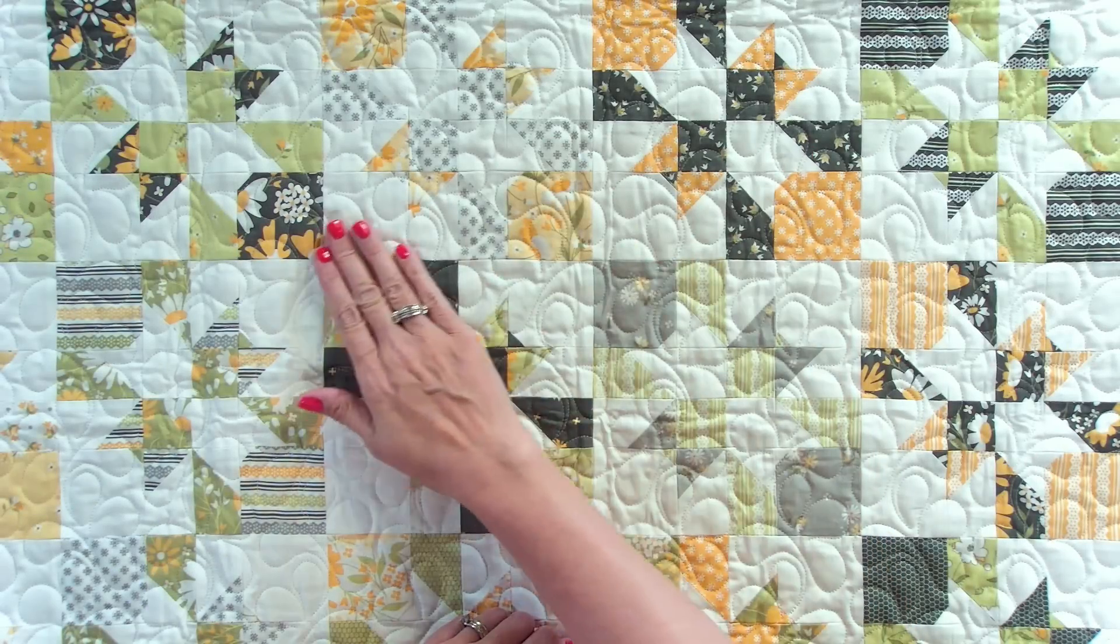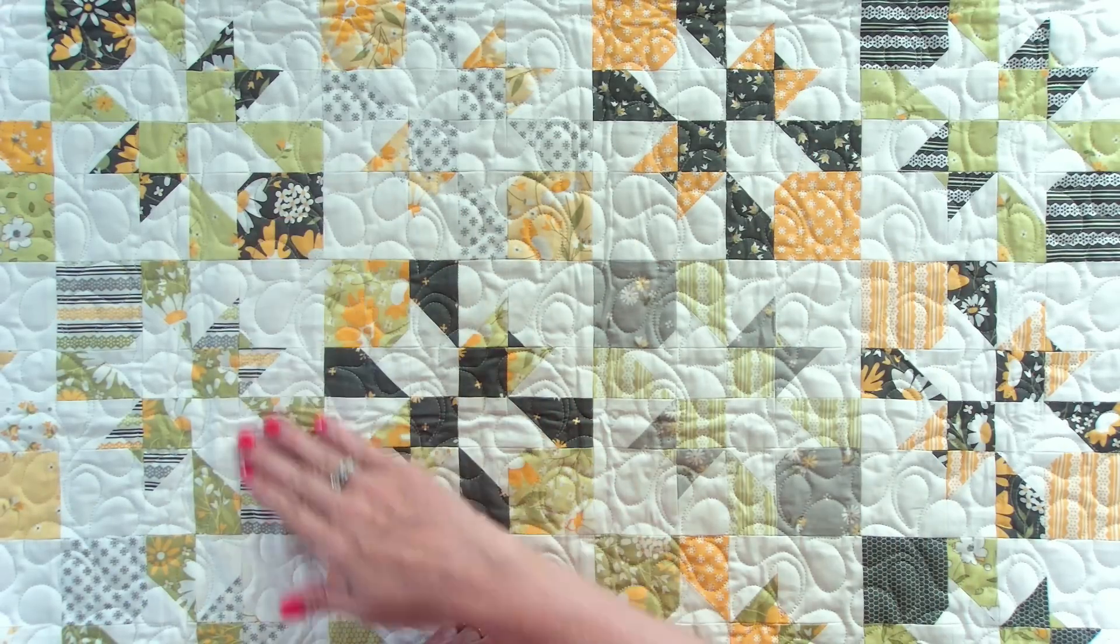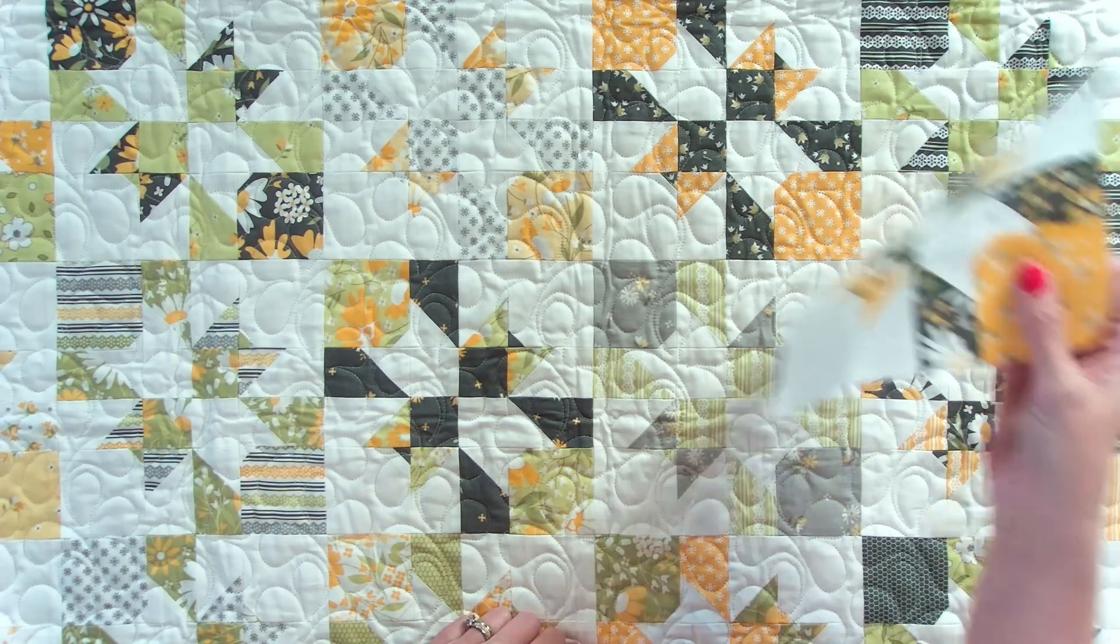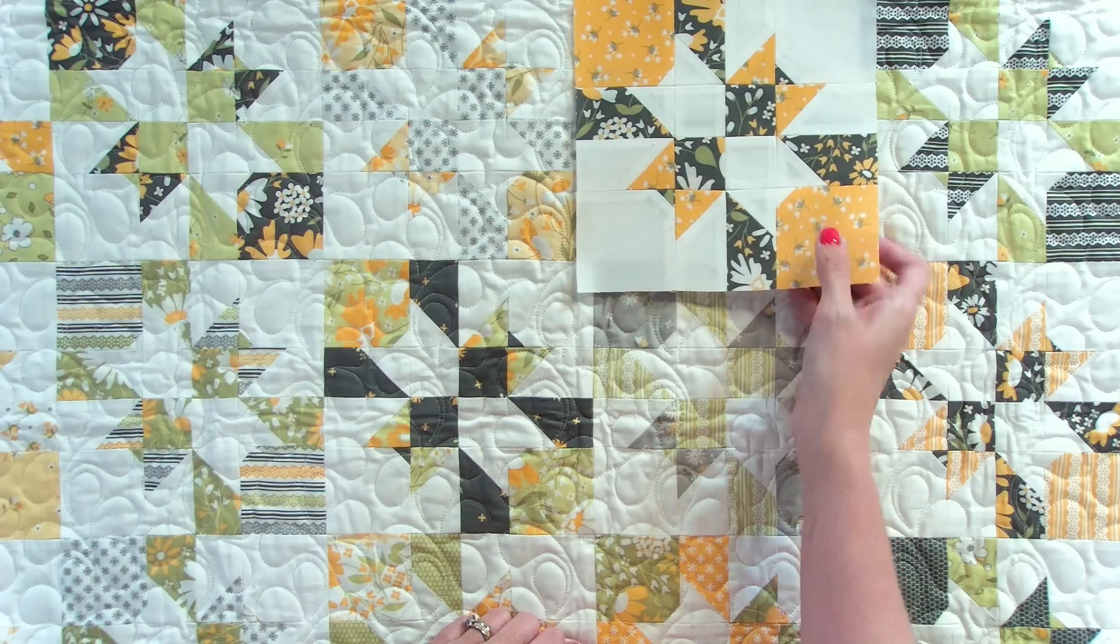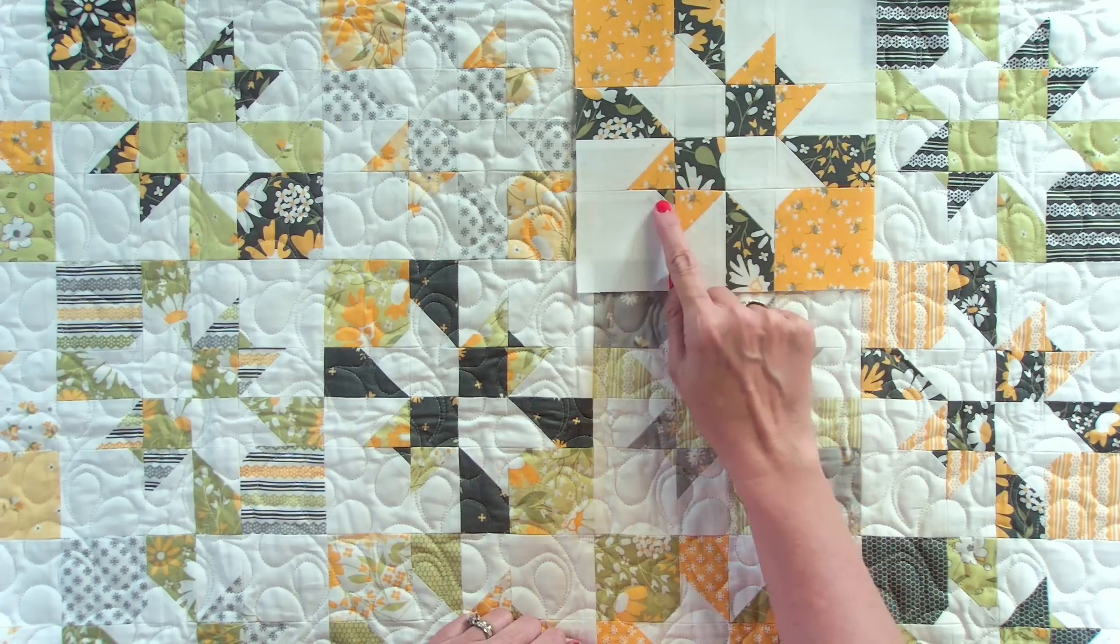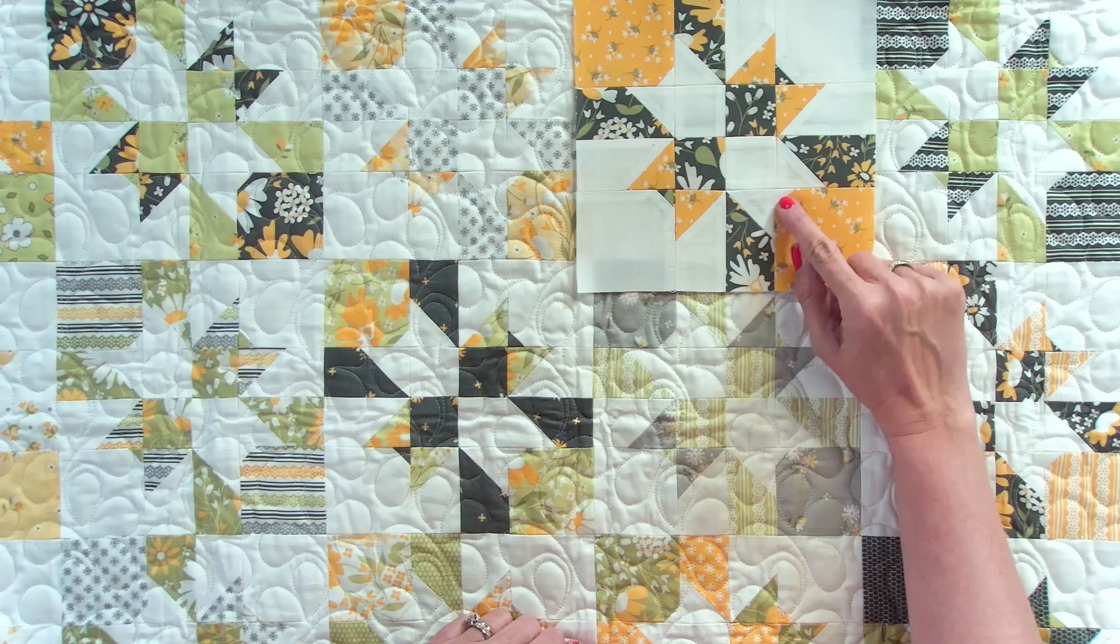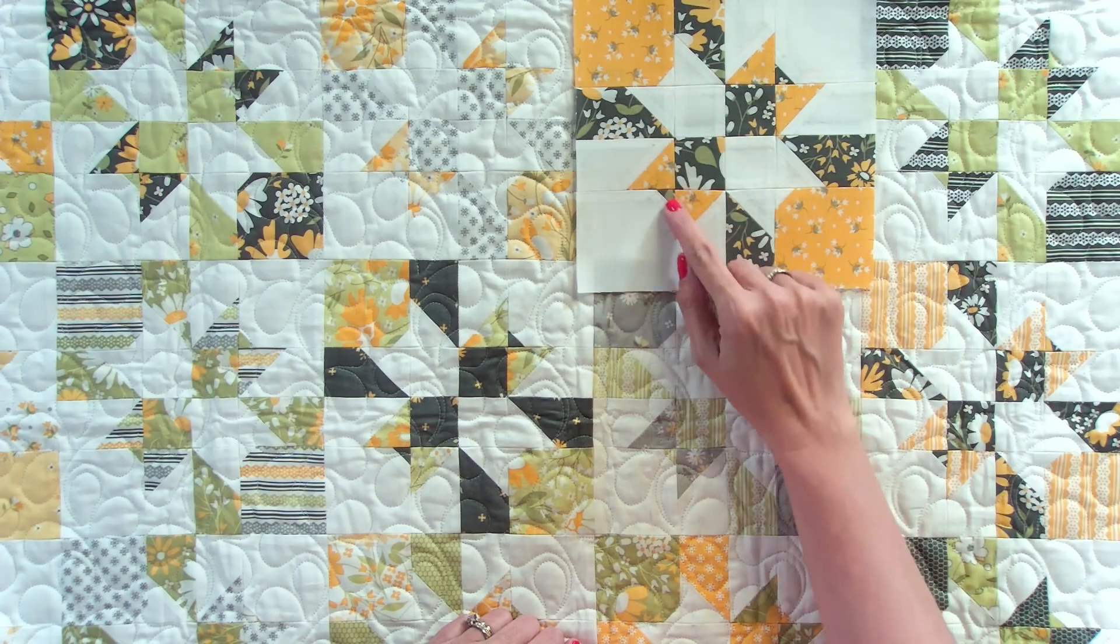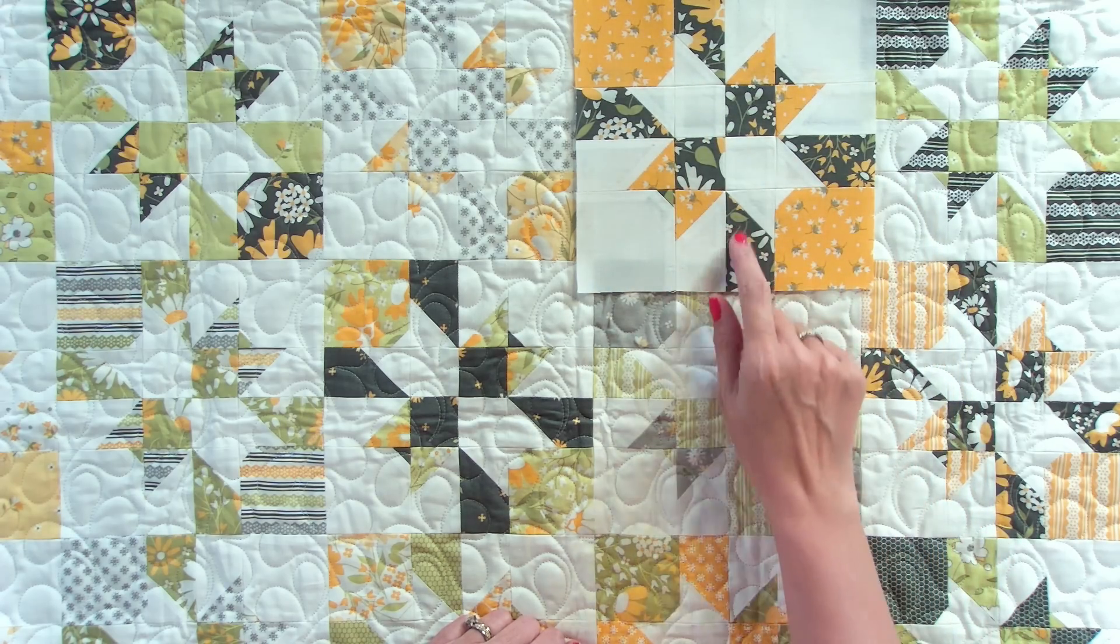So when you look at the layout, you're gonna get a really nice twinkling star effect. And you can see how the block looks before it's quilted. And what's really cool is you didn't have to piece these really small seams because we just cut. And it's a really cool effect.